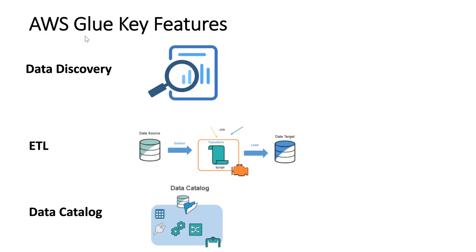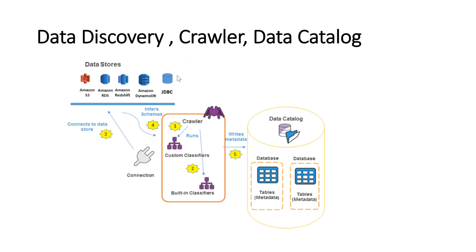So let's look at the key features of AWS Glue. AWS Glue helps you in data discovery, ETL, and data cataloging. These are the three important features of AWS Glue, and let's discuss each of these in detail. The first main use case of AWS Glue is data discovery — crawling and cataloging of your data.